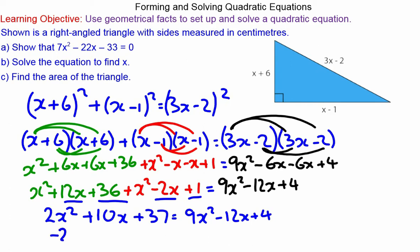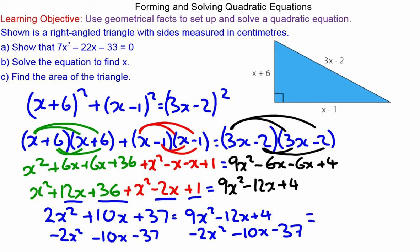We can rearrange the terms to make the quadratic equal zero. So we'll subtract 2x² from both sides, subtract 10x from both sides, and subtract 37 from both sides. So we are left with 7x² - 22x - 33 = 0.